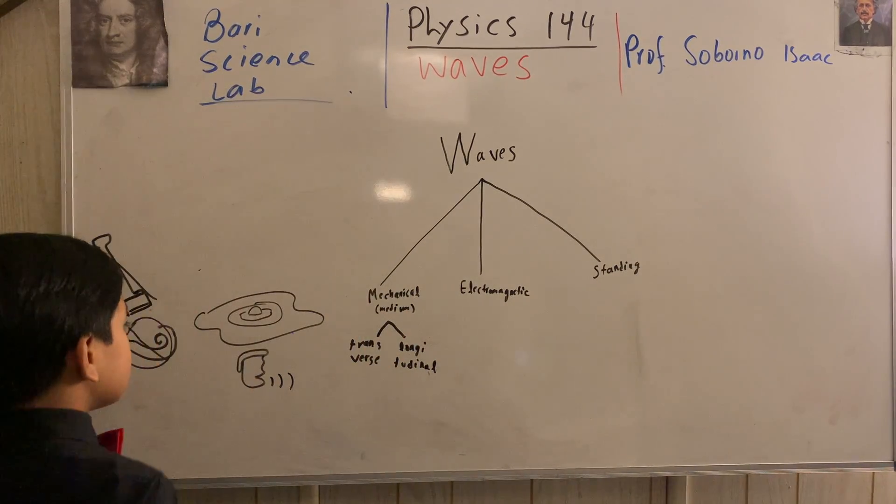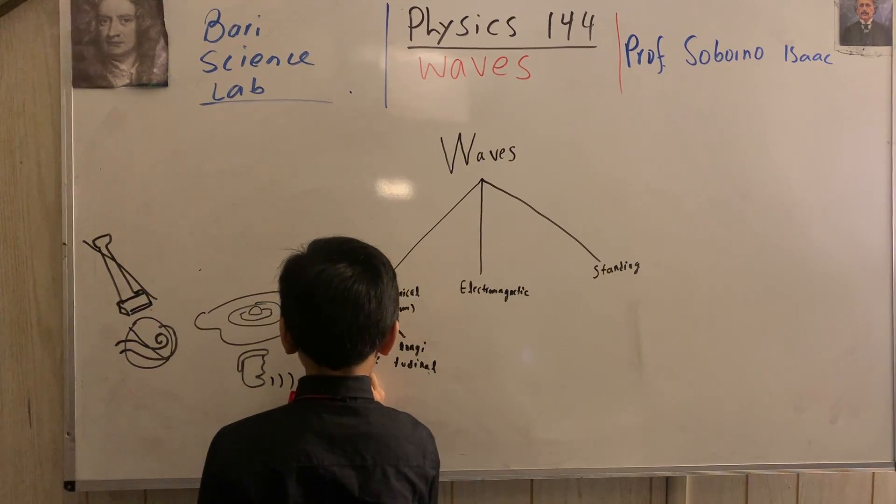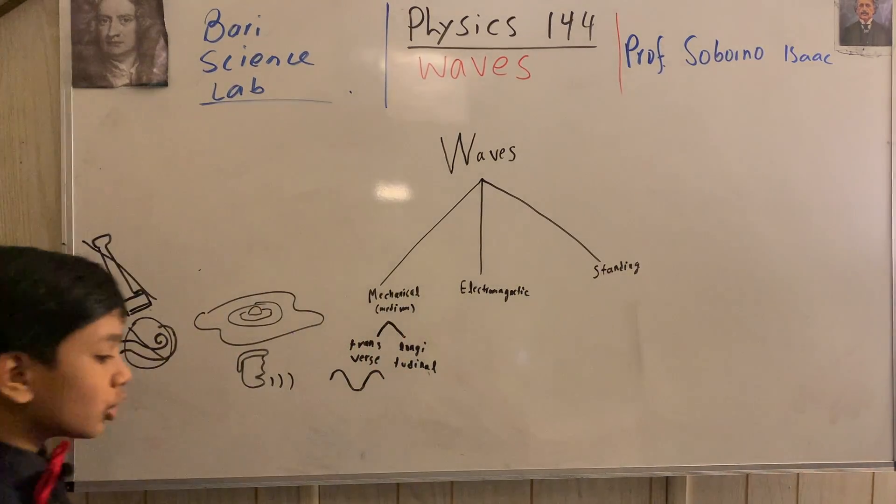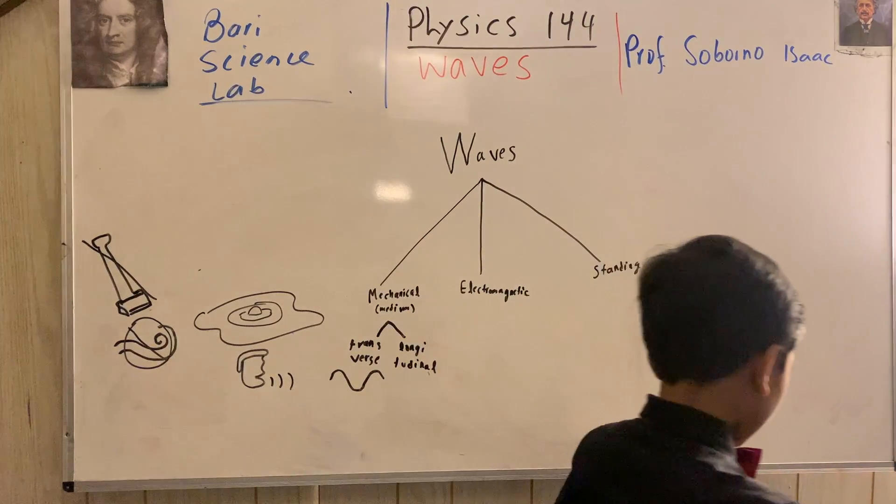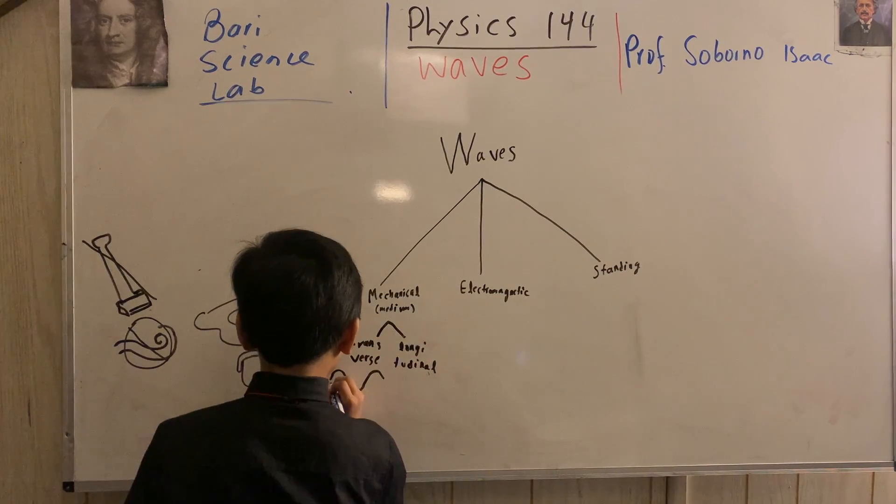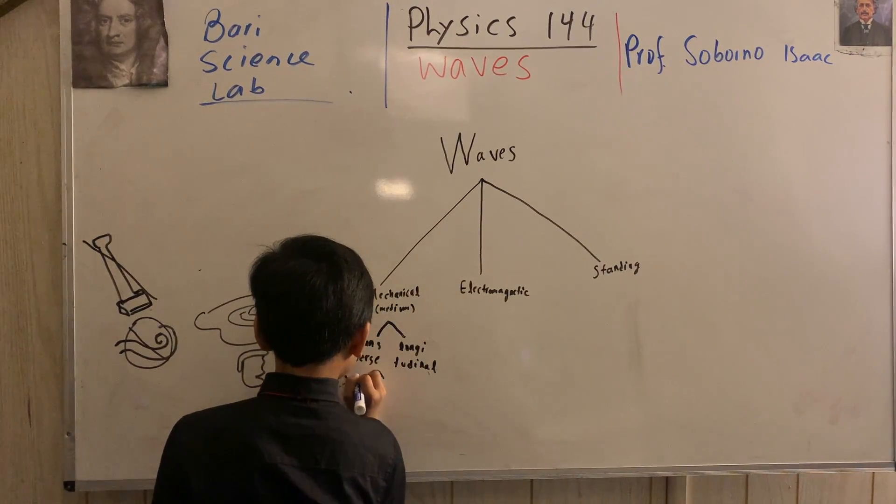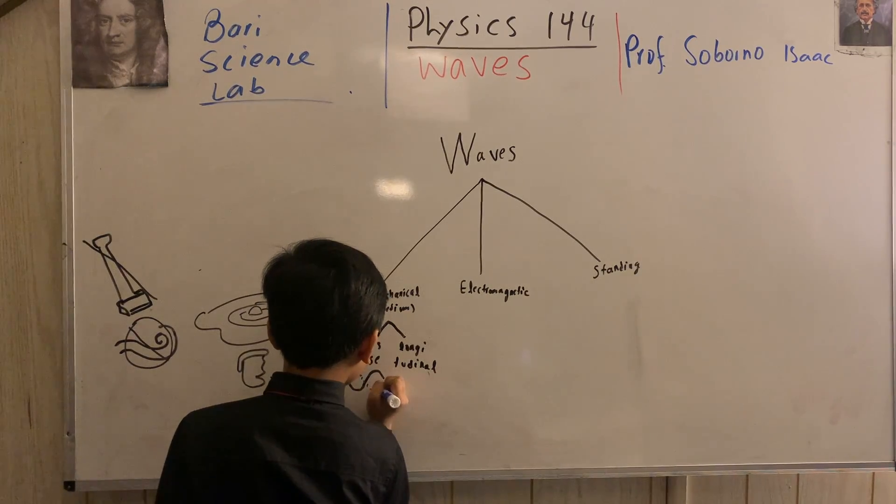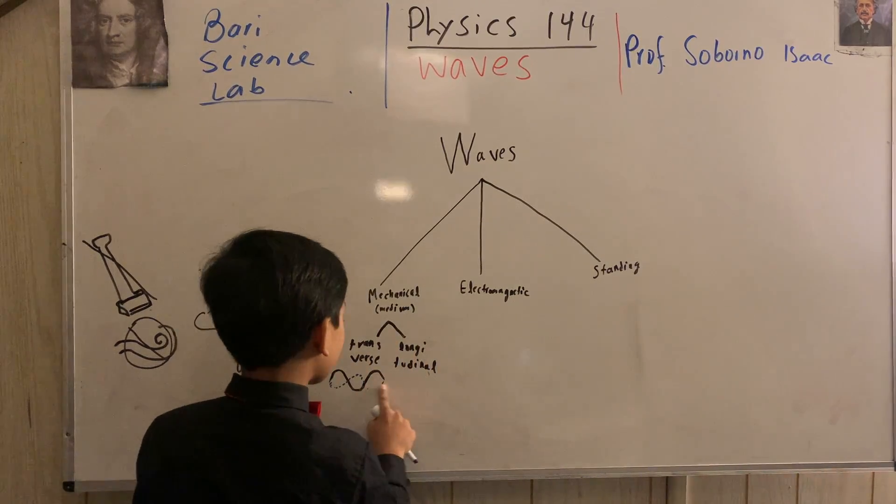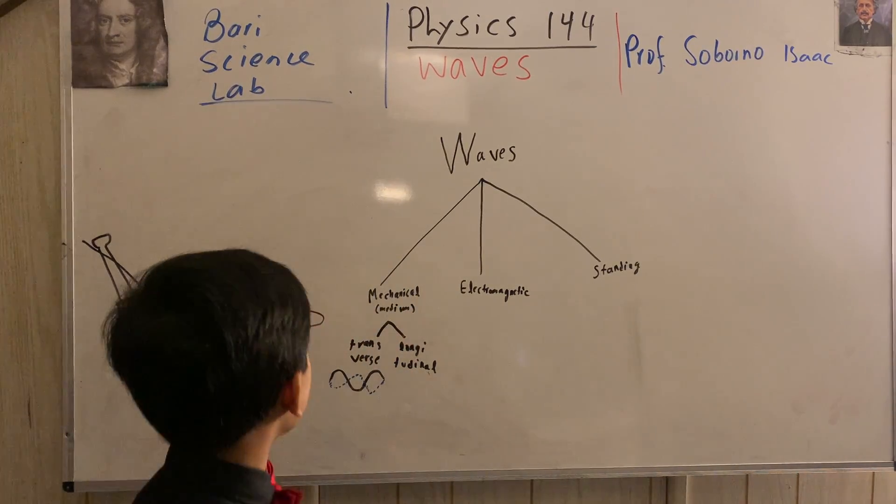And there are longitudinal waves. So, a transverse wave would look like this. So, we have the disturbance, and then the effect caused is exactly perpendicular to what the disturbance that just happened. So, you see, this would be actually pointing out of the board, but I don't think I did a good job trying to highlight that.